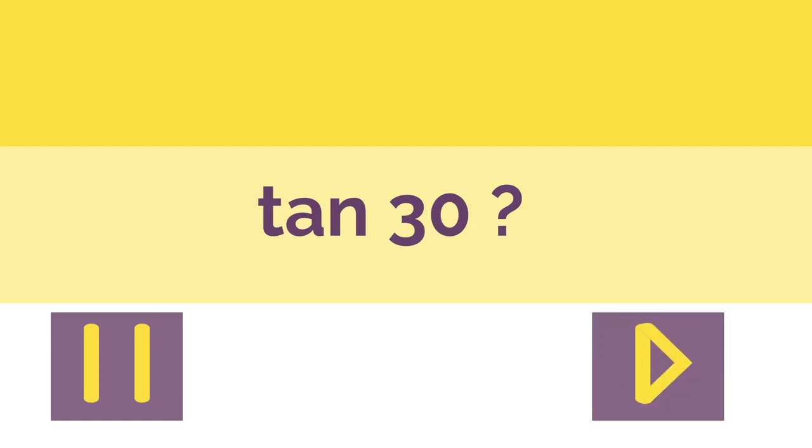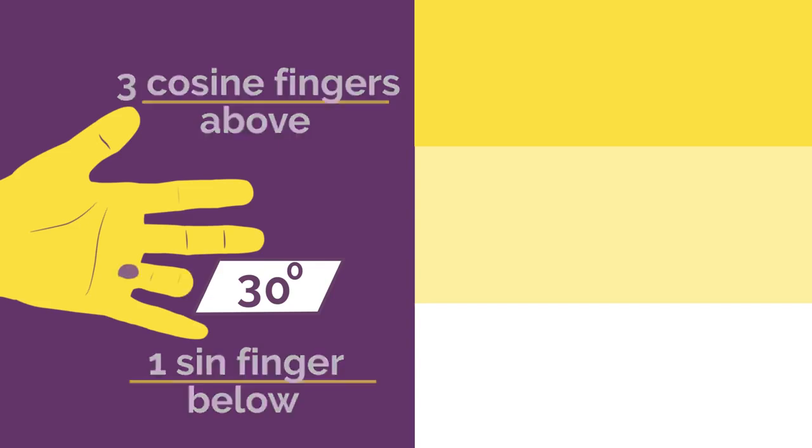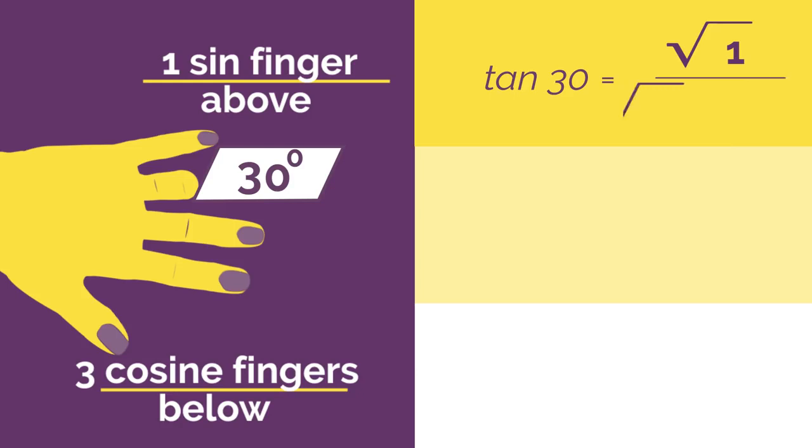What would tan 30 be? Work out the answer and click here when you're ready to check. Did you get square root 1 divided by square root 3? Which would simplify to 1 over root 3.